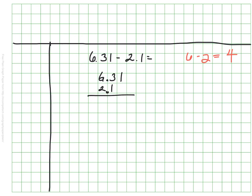And again, since I have an empty value here, I'm actually going to fill it in with a 0, and then I'll just subtract as normal. 1 minus 0 is 1, 3 minus 1 is 2, keep my decimal in the same spot, and 6 minus 2 is 4. 4.21, I feel pretty comfortable and confident because my estimate was 4, and 4.21 seems reasonable.